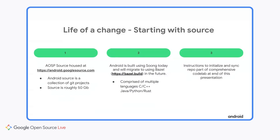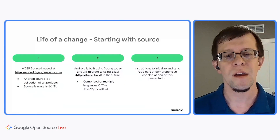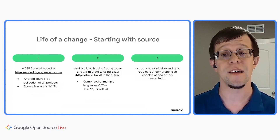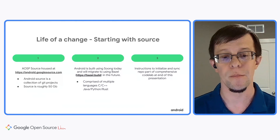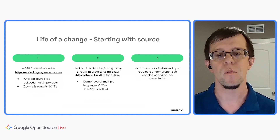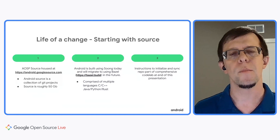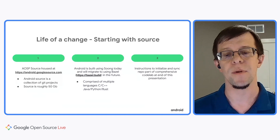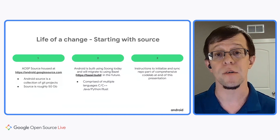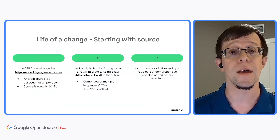It's comprised of multiple languages, the most well-known of which is, of course, Java, but there's also C and C++, Python, and even a little Rust sprinkled throughout the Android source code. Instructions on how to initialize and sync the source are covered in the Codelab, and more info on that is coming up. Android is built with a build system we call Soong, but it's in the process of migrating to the more commonly known Bazel build system. More information about Bazel can be found at bazel.build.